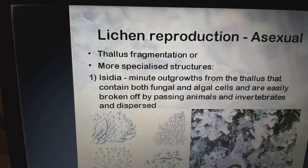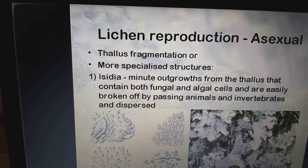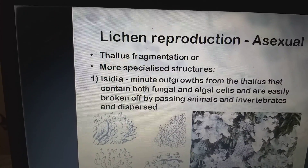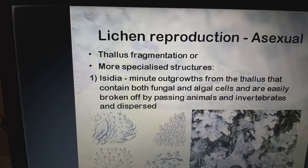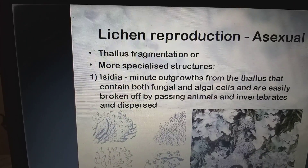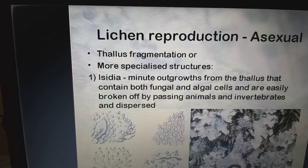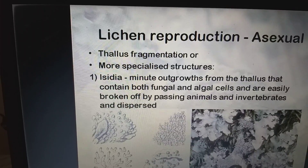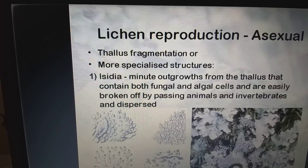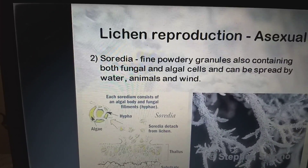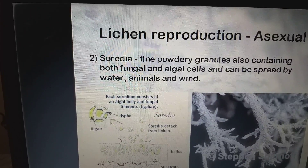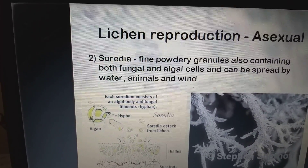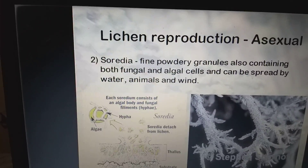Lichens reproduce asexually by thallus fragmentation or by specialized structures. Minute outgrowths from the thallus — called soredia — contain both fungal and algal cells and are easily broken off by passing animals or invertebrates and dispersed. Fine powdery granules also contain both fungal and algal cells and can be spread by water, animals, and wind.